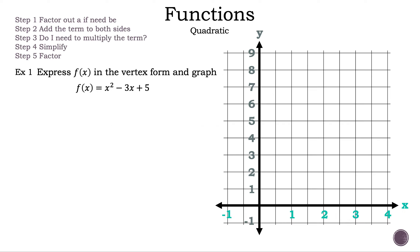Let's take a closer look at example 1. The steps are: Step 1, factor out a if need be. Step 2, add the term to both sides. Step 3, do I need to multiply the term? Step 4, simplify.